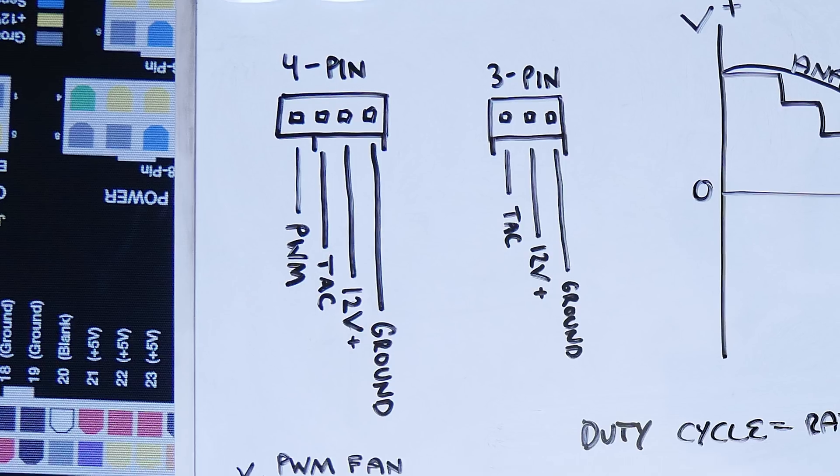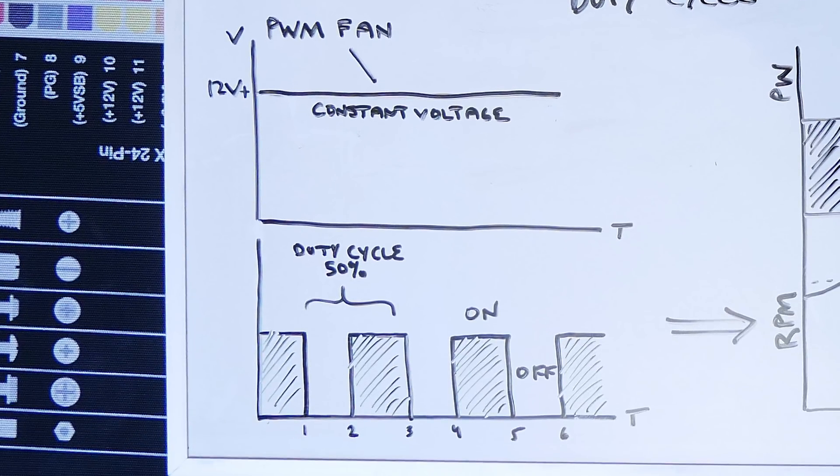And the longer the pulse from this wire, or the larger the gaps in the pulses, the lower the duty cycle, which essentially affects the RPM. The lower the duty cycle, the lower the RPM of the fan.